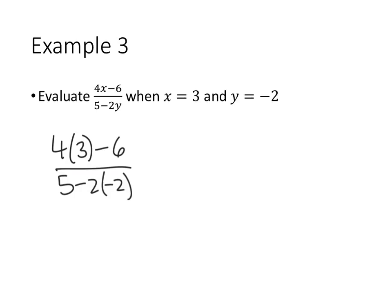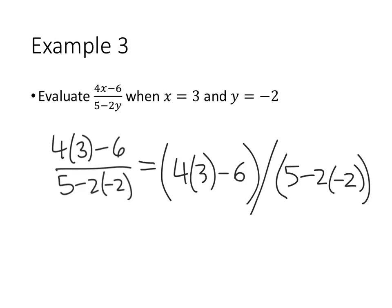So really what's happening here, if we wrote this without the big fraction bar, is we've got this complicated top expression 4×3 - 6 divided by the complicated bottom expression 5 - 2×(-2). If we were going to type this in our calculator, that's how we would want to do it. We would want to make sure we put the bottom and the top both in parentheses to show that it's a complicated top and a complicated bottom to our fraction. So now the P in PEMDAS is important. We've got to figure out those two expressions on the top and the bottom of our fraction.